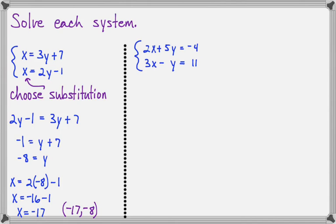Now let's look at 2x plus 5y equals negative 4 and 3x minus y equals 11. You could solve this for y pretty easily, but I think I'm going to choose to solve it by the addition method.